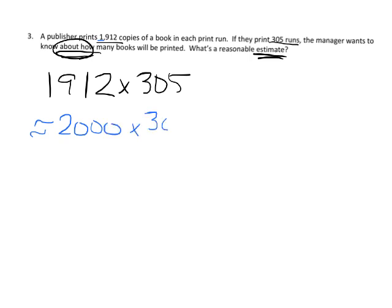2,000 times 300. Well, 2 times 3 is 6, and then we're going to stick on 1, 2, 3, 4, 5 zeros.